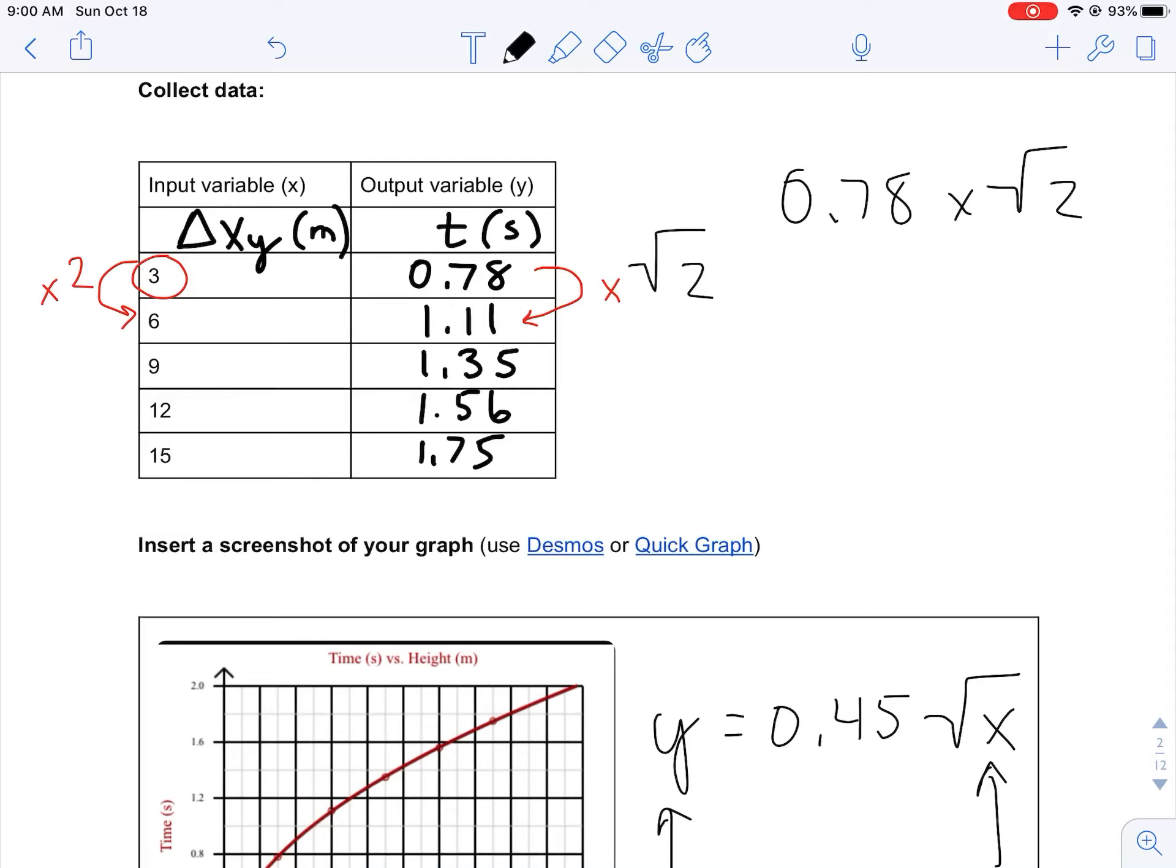Make sure I'm getting same values as you guys. 0.78 times two square root—I got 0.8, I did something wrong. Let's do two square root first. Two square root gives 1.414 times 0.78, equals 1.10. I got 1.10 seconds.